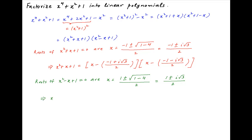Therefore, x squared minus x plus 1 can be factorized into (x minus (1 plus i times root 3 upon 2)) multiplied by (x minus (1 minus i root 3 upon 2)).